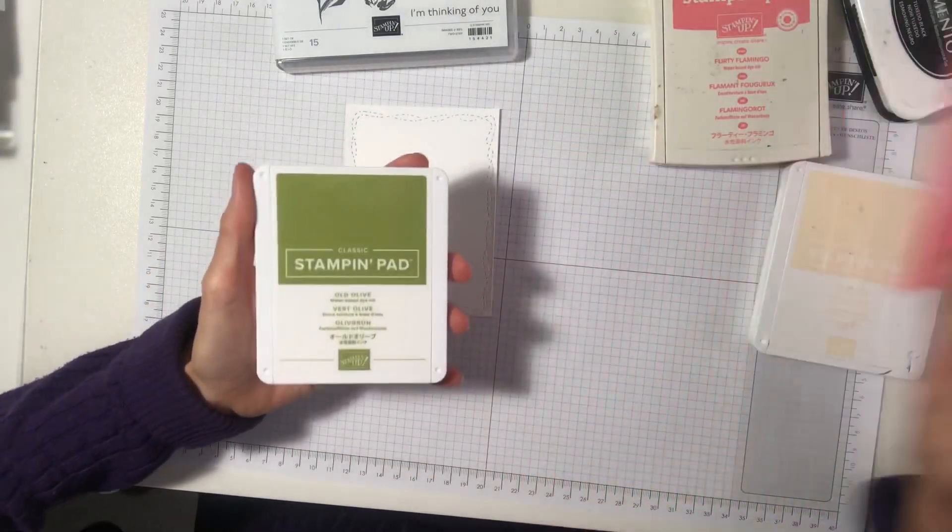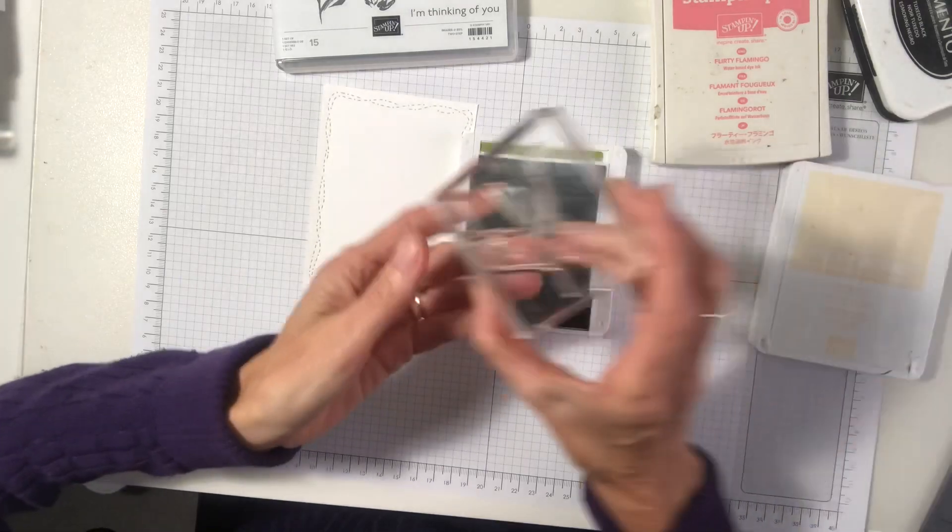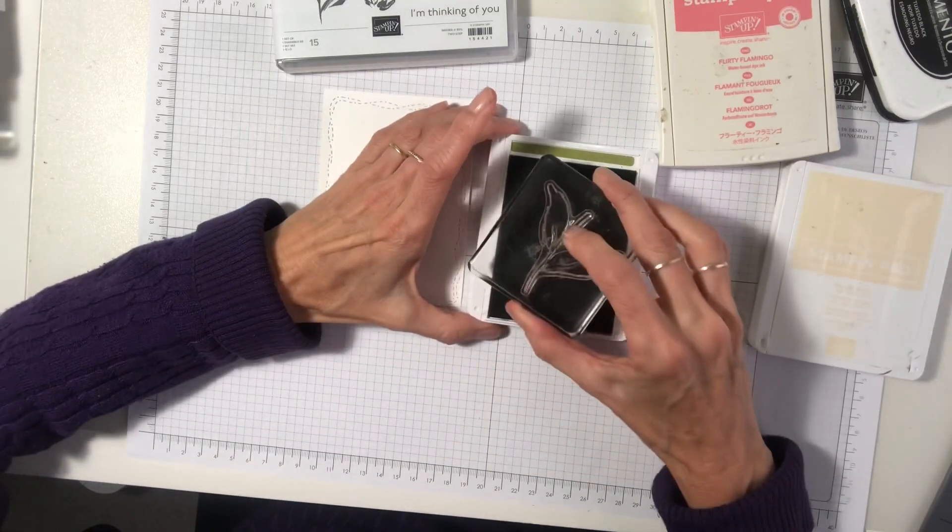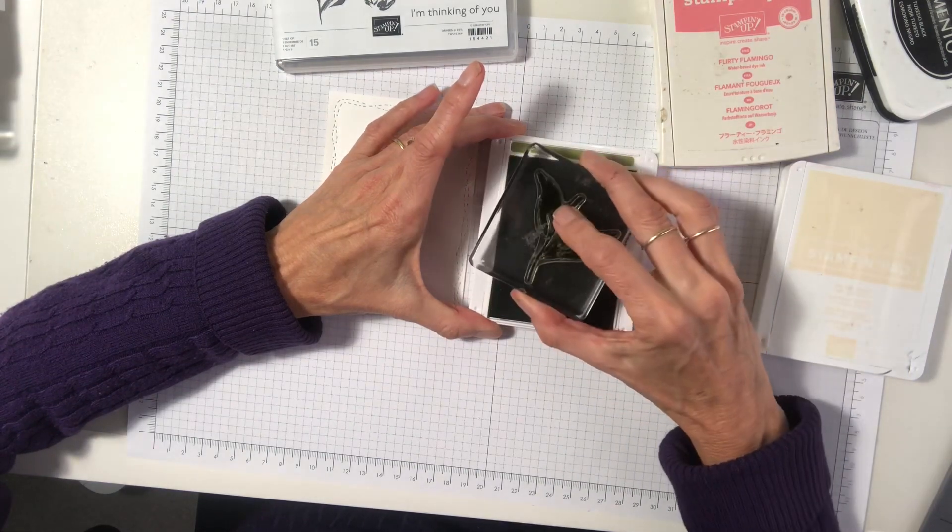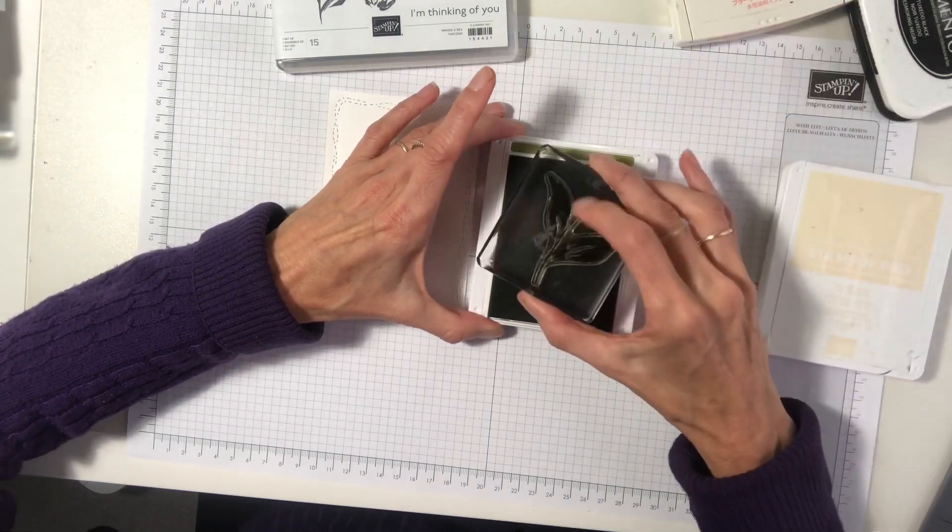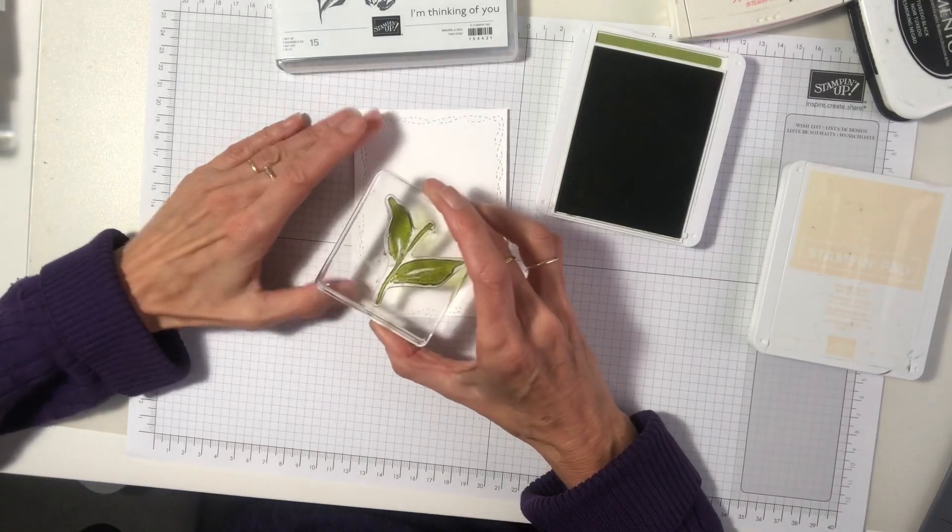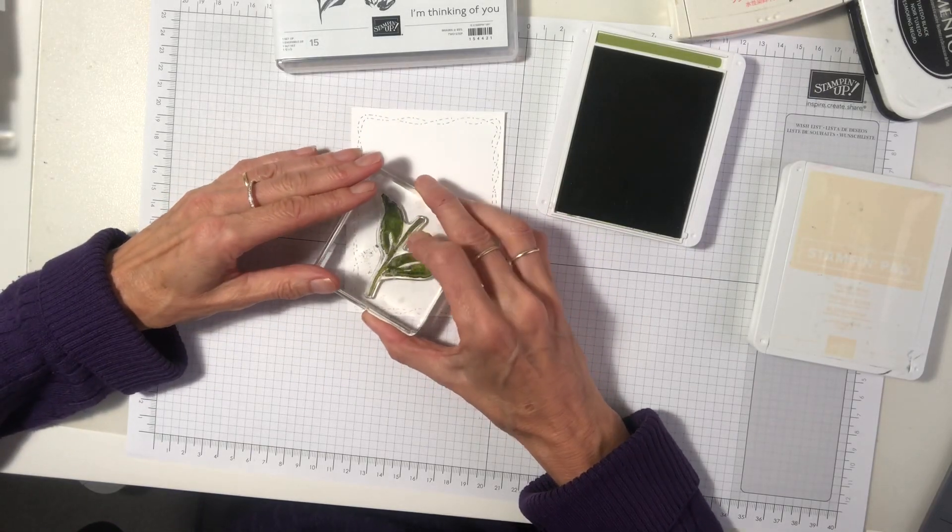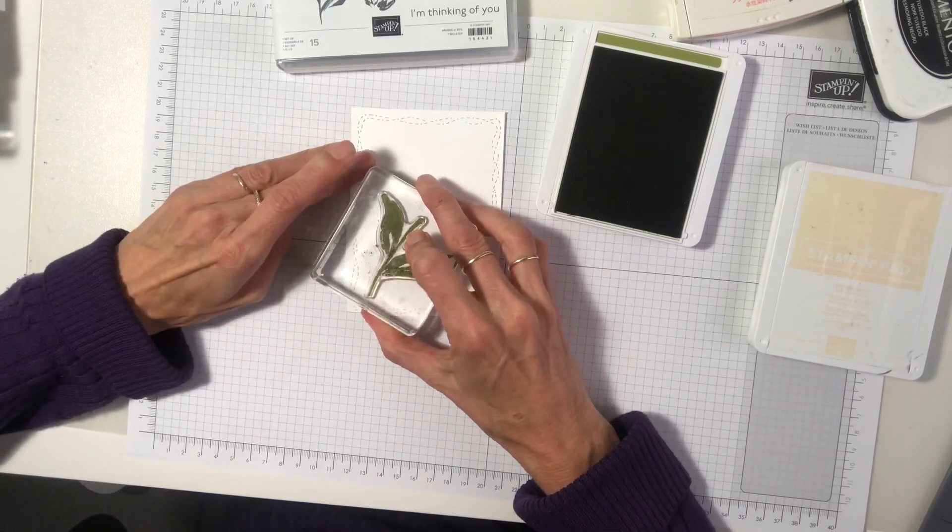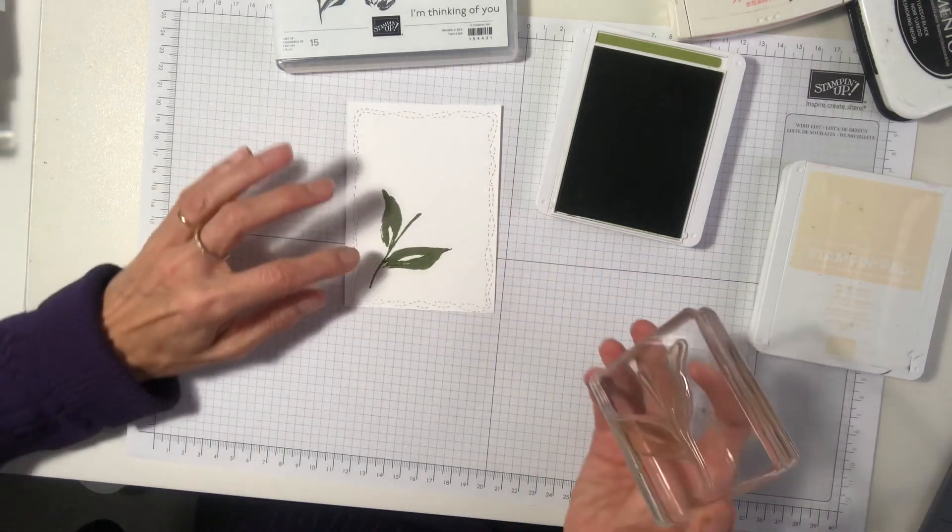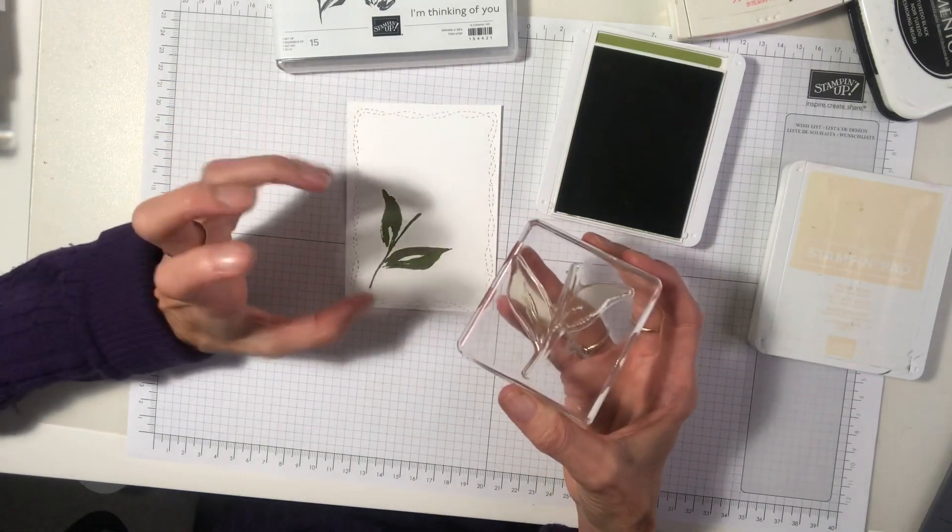Firstly, you want to stamp your leaf. Just give that a good inking. And we're going to stamp that down in our bottom corner. Give that a good press over.